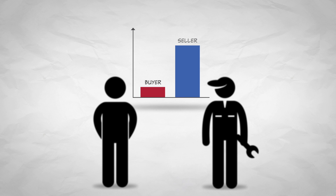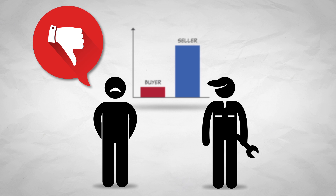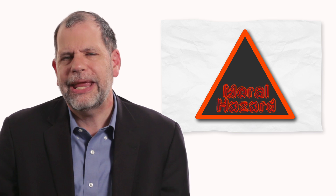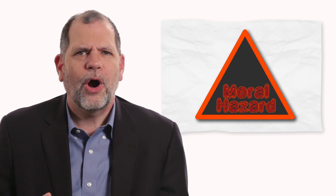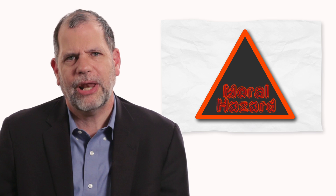When one party to an exchange has an information advantage, they may have an incentive to use that advantage to exploit the other party. And that temptation to exploit is called moral hazard. The car repair problem is just one example of asymmetric information and moral hazard.